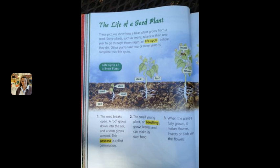Other plants take two or more years to complete their life cycles. Life Cycle of a Bean Plant: The seed breaks open, a root grows down into the soil, and a stem grows upward. This process is called germination.